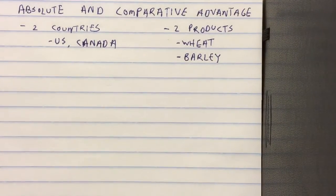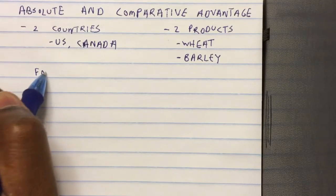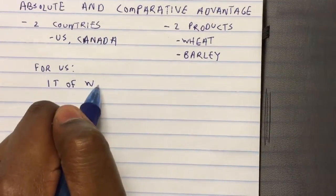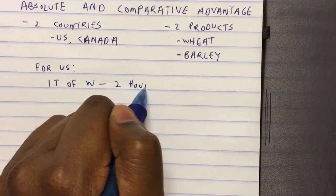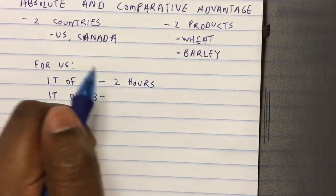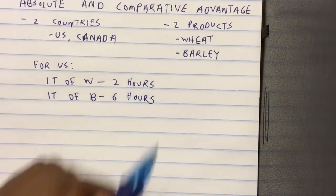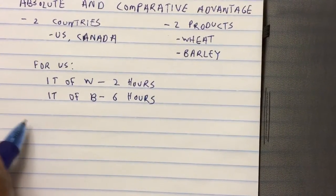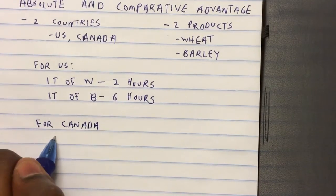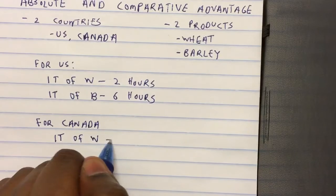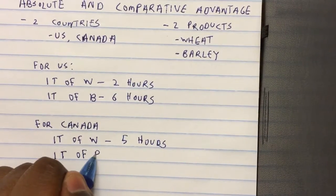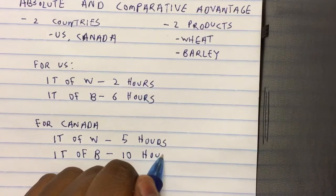Now we want to see what technology there is for the US and Canada. For the US, one ton of wheat (W) requires two hours to produce, and one ton of barley (B) requires six hours to produce. For Canada, one ton of wheat requires five hours to produce, and one ton of barley requires ten hours to produce.